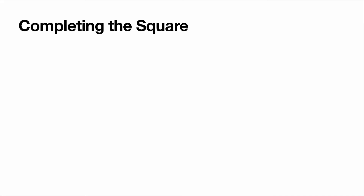In general, the perfect square we use to complete the square of any quadratic will be x plus half the coefficient of x. This is because if we expand (x + u)², we always get x² + 2u·x + u². So if u is half the coefficient of x, then 2u equals the coefficient of x. Let's use this trick on the next example.